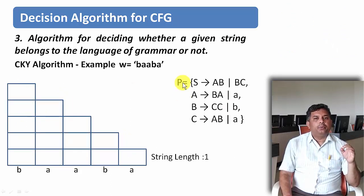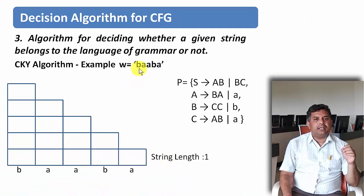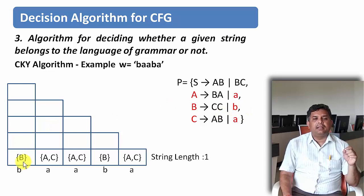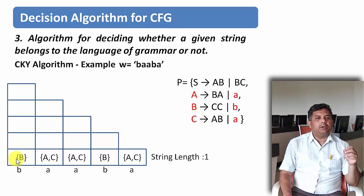The first thing we do is fill the string-of-length-1 row. The string is B, A, A, B, A — written across the bottom row. For each symbol we check which production rules start with that terminal. For B, the productions starting with B give us variable B. For A, the productions starting with A give us variables A and C. So the bottom row is filled as: B, {A,C}, {A,C}, B, {A,C}.